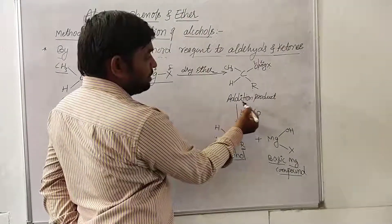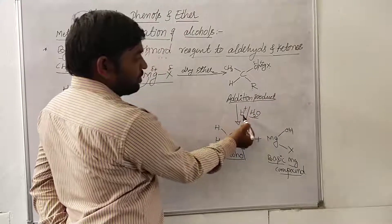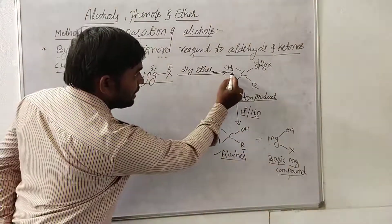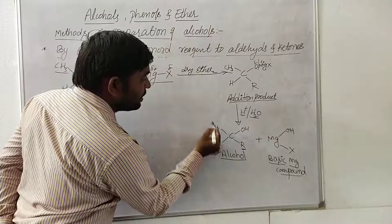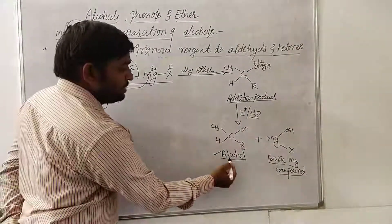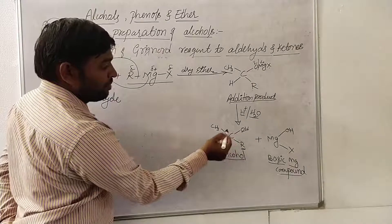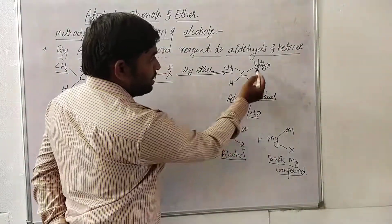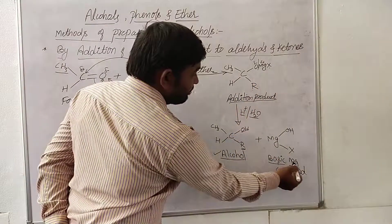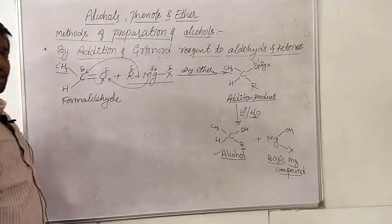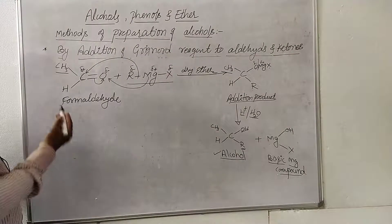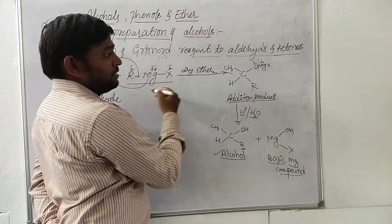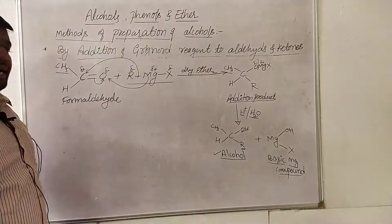This is called the addition product. Further, which undergoes acid hydrolysis, leading to the formation of hydrogen. Here we write CH₃CHO — the result is an aliphatic alcohol substituted on this carbon atom. The remaining left out is MgX and MgOHX, which is the basic magnesium compound — same as before.